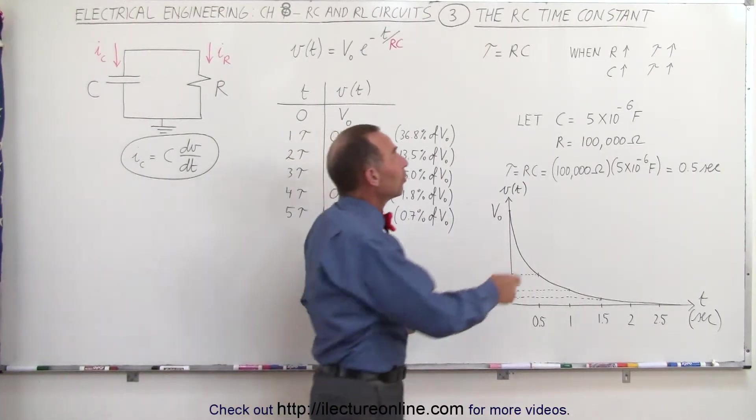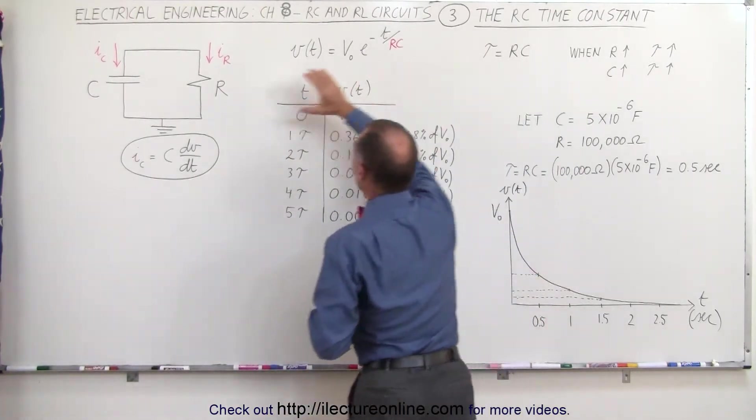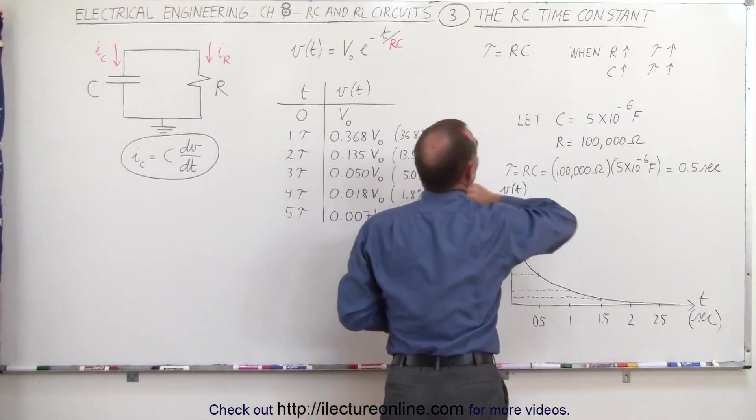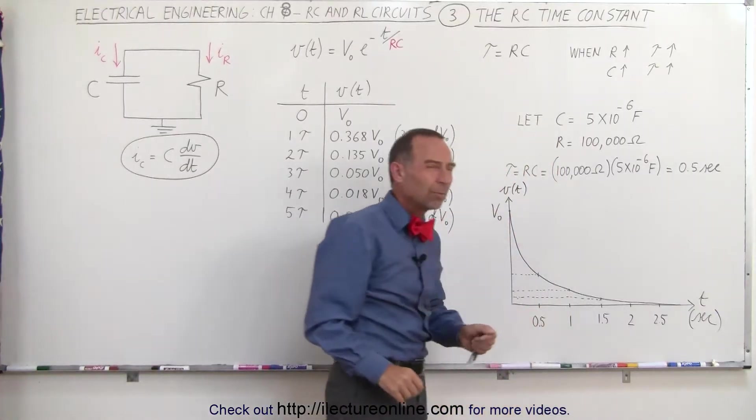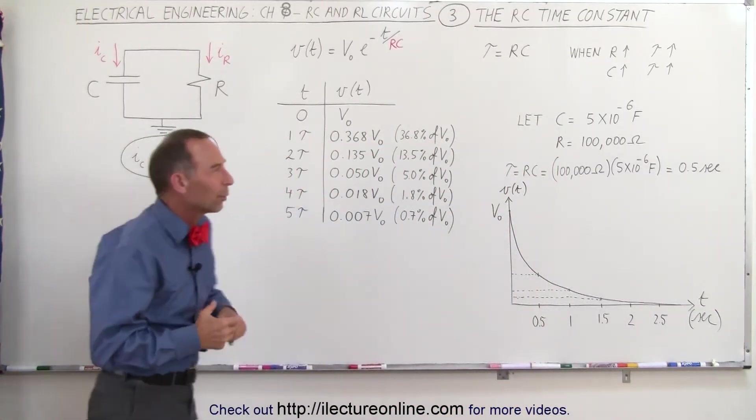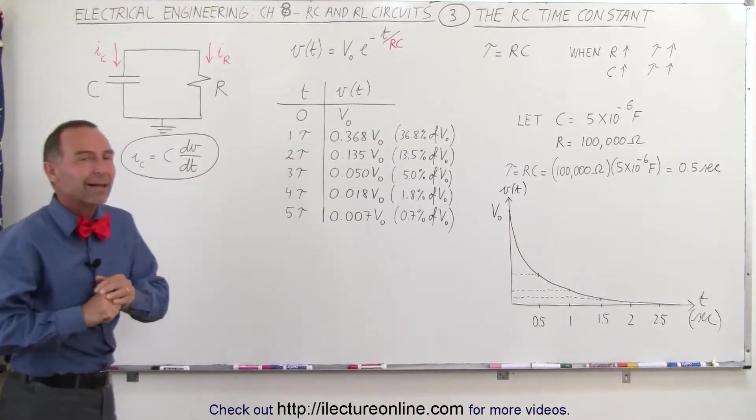What that means is that if the resistance increases in the circuit, the time constant increases, or if the capacitance increases, the time constant increases. But what is it really that we're looking at here? What does it really mean when we talk about the time constant?